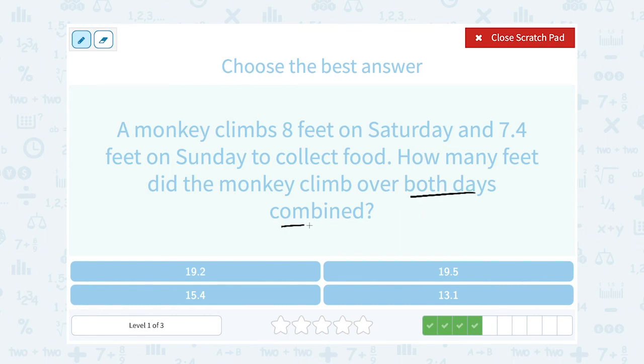Okay, well both days combined is telling us to add the two numbers together. And when I'm adding, I want to make them both in the same form, or in this case, both decimals. So remember, 8 is the same thing as 8.0. So I'm going to think of this as 8.0 feet plus 7.4 feet.